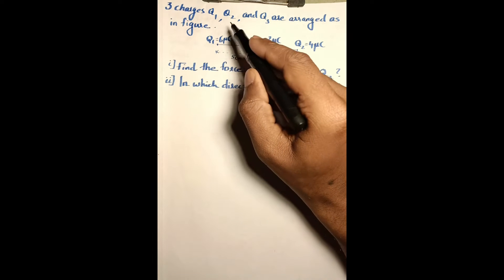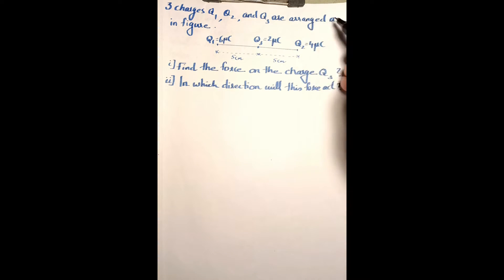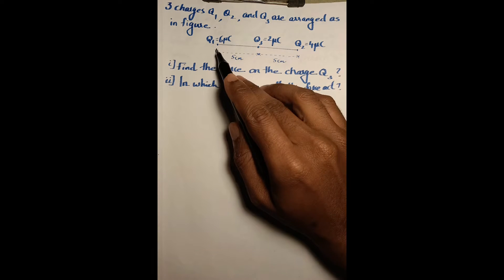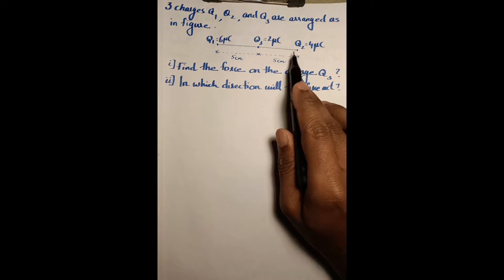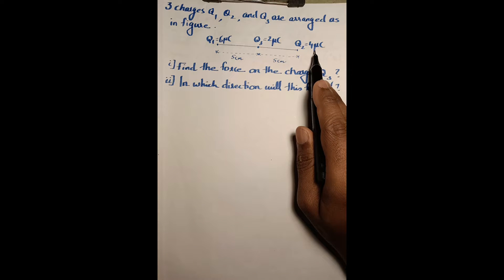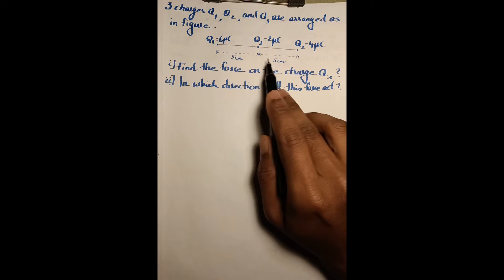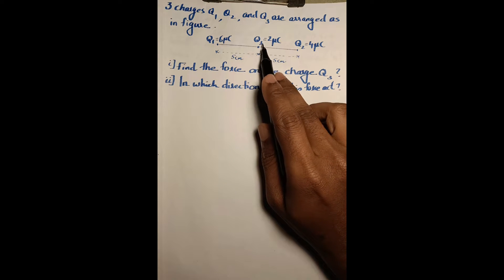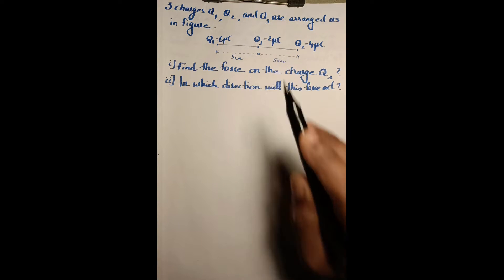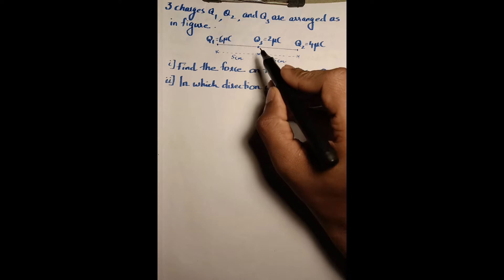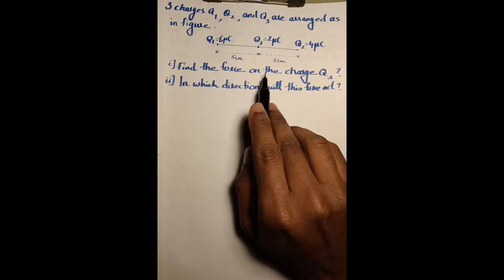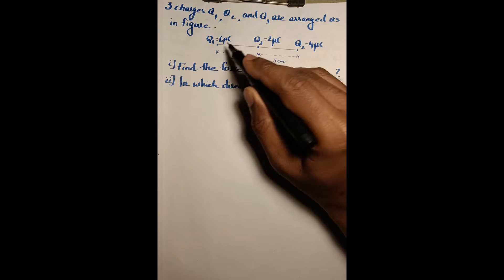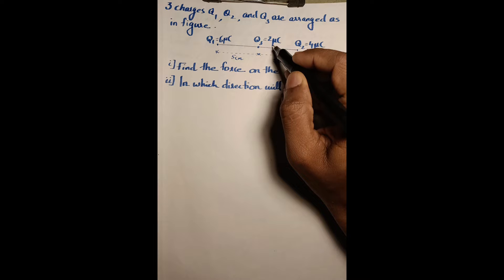Three charges q1, q2, and q3 are arranged as shown in the figure. At the ends there are two charges: q1 equals six microcoulombs and q2 equals four microcoulombs. At the midpoint, since the distance is equal — five centimeters on each side — a third charge q3 of two microcoulombs is placed. We are asked to find the force acting on q3.